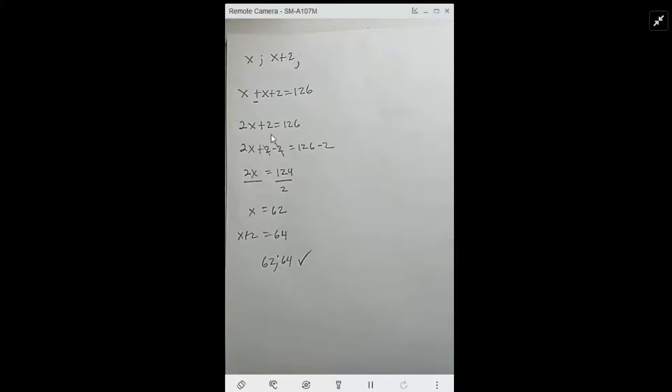2x plus 2 equals 126. We combine like terms. 2x, subtract 2 from both sides, which leaves 2x equals 124.